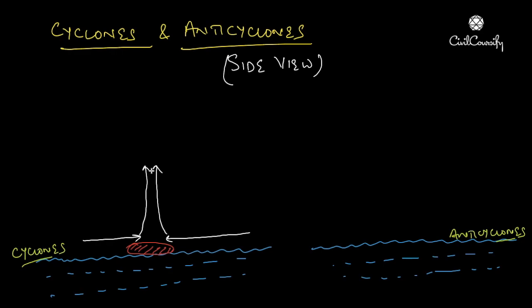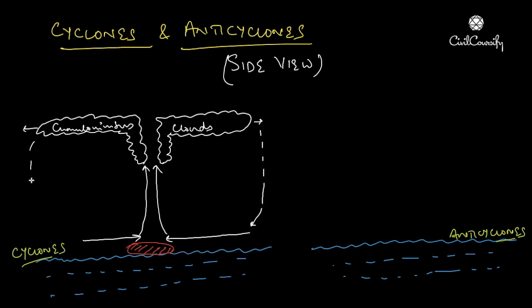These winds carry a lot of moisture with them. While converging at the low pressure and rising, this water vapor and moisture will cool down because the winds have reached a higher altitude. Due to cooling down, water vapors convert into water droplets and lead to the formation of clouds, completing the cycle of cyclones.